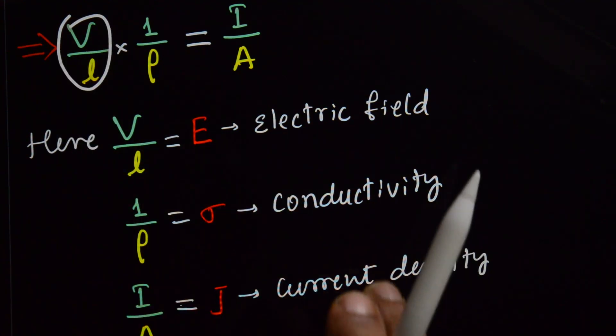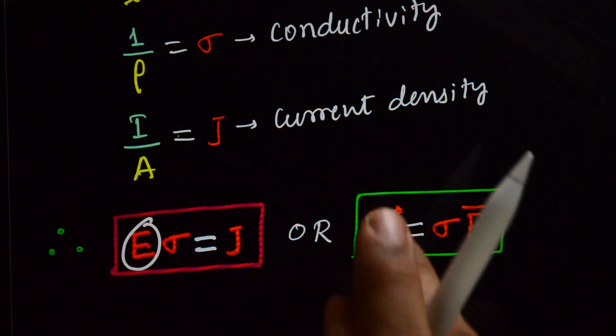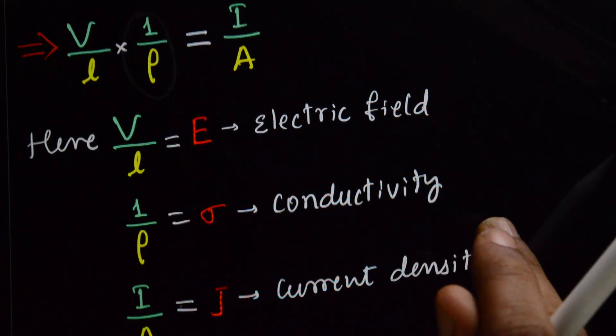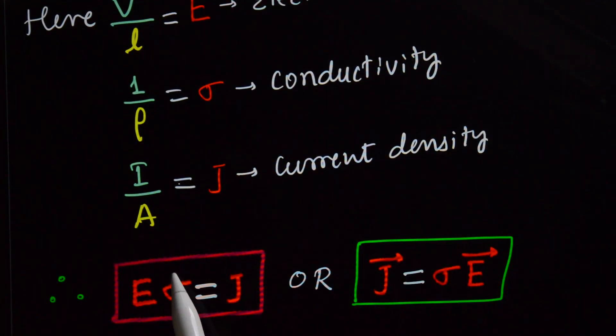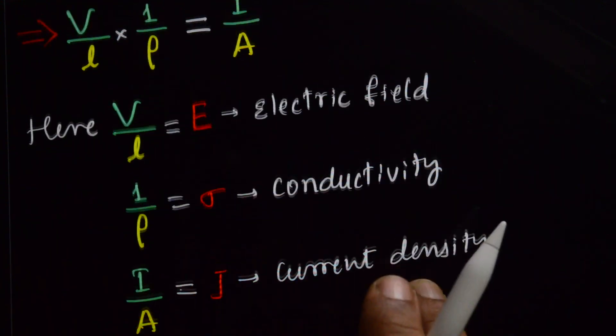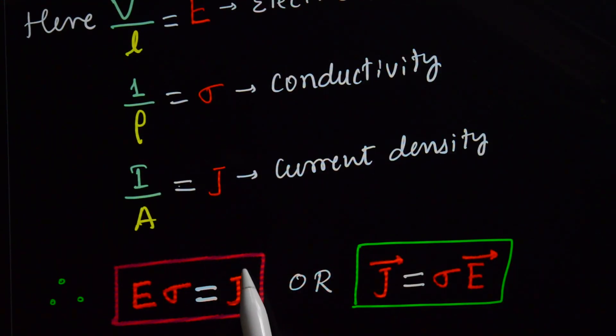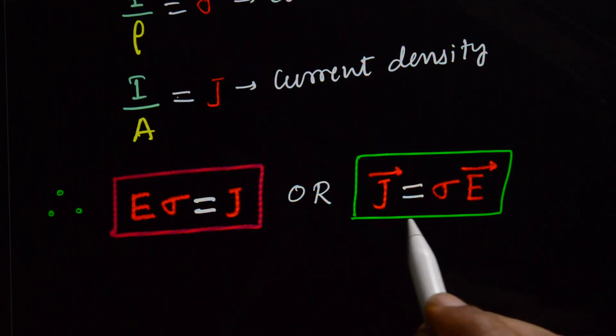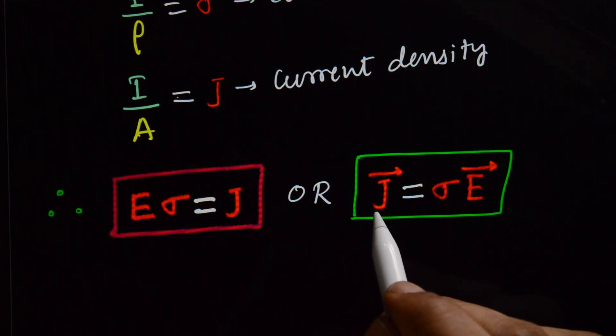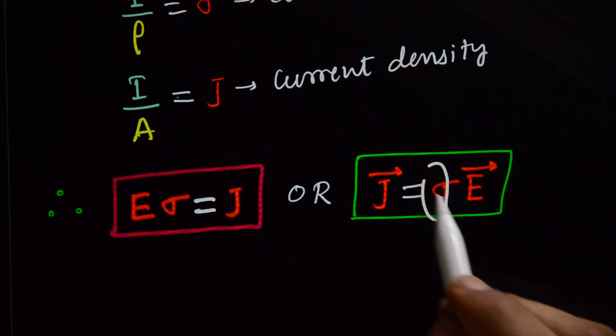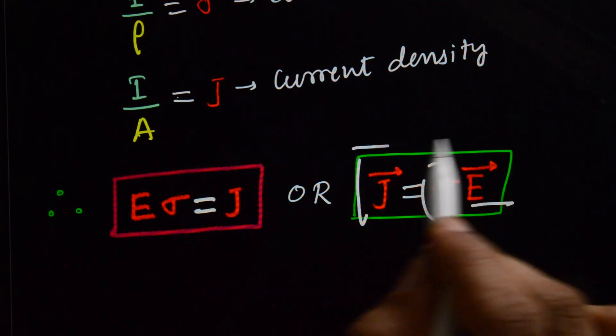And substitute V by L is E, 1 by rho is sigma, I by A is J. Or we can express like this, that current density J is equal to conductivity into electric field.